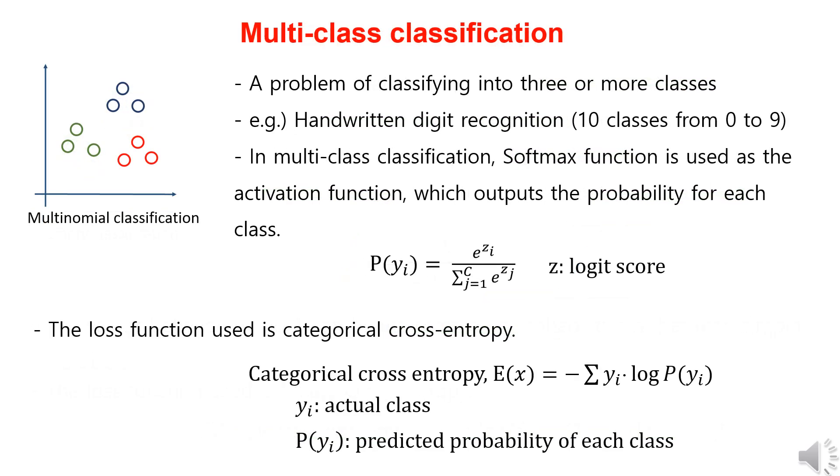Multi-class classification involves classifying into three or more classes. Examples include recognizing handwritten digits from zero to nine, or identifying objects in a photo. In multi-class classification, we use the softmax function as the activation function, which outputs the probability for each class.